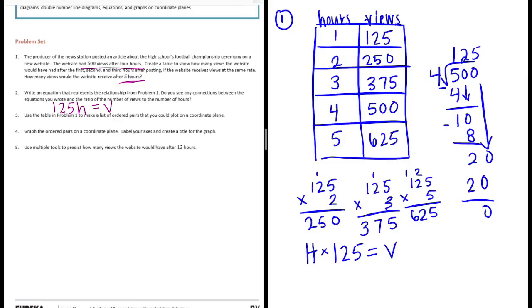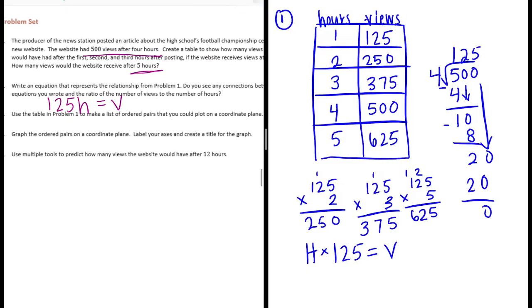Number three: use the table in problem one to make a list of ordered pairs that you could plot on the coordinate plane. So I'm just going to list them right here. We would have (1, 125), (2, 250), (3, 375), (4, 500), and (5, 625).